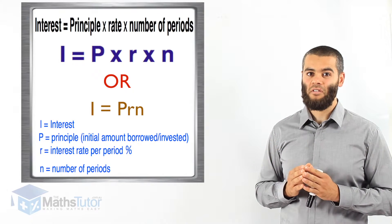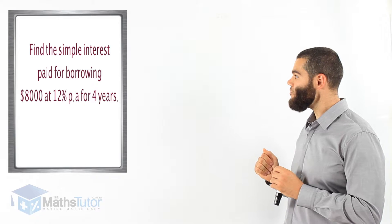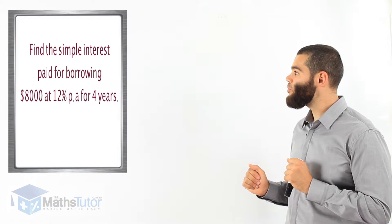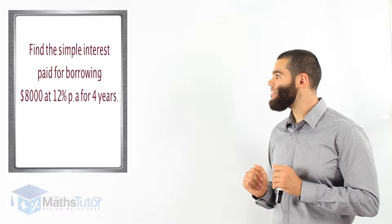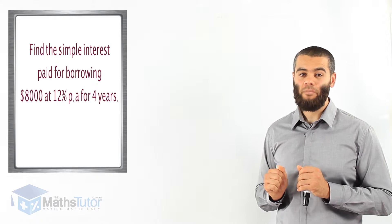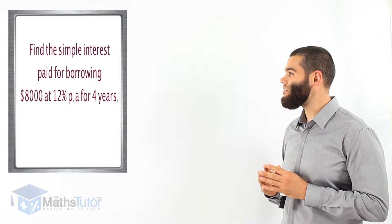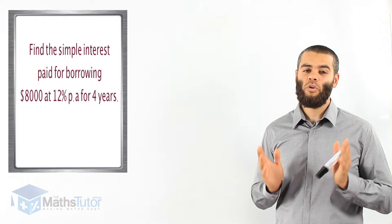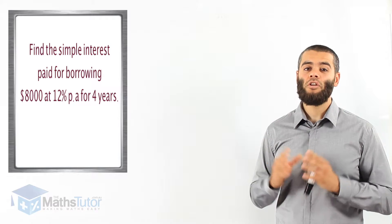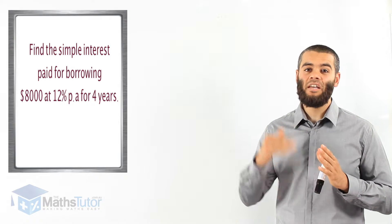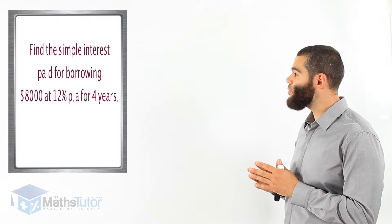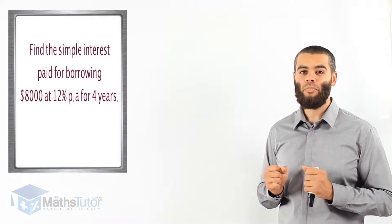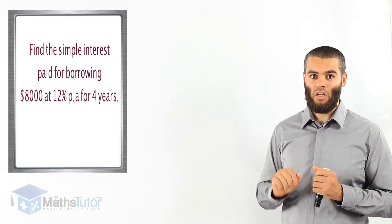Let's look at an example. Find the simple interest paid for borrowing $8,000 at 12% per annum — meaning per year — for four years. Here we have a person who's borrowing $8,000 from the bank. When you borrow from a financial institution, you're going to have to pay back what you borrow plus interest on top. The bank is charging them 12% per annum for four years.